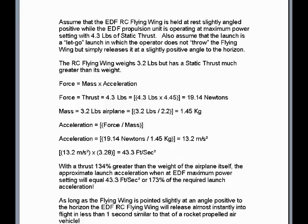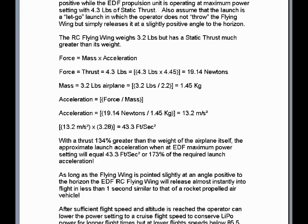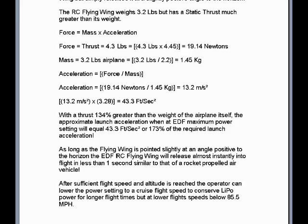As long as the flying wing is pointed slightly at a positive angle to the horizon, the EDF RC flying wing will release almost instantly into flight in less than a second, similar to a rocket-propelled air vehicle. After sufficient flight speed and altitude is reached, the operator can lower the power setting to a cruise flight speed to conserve LiPo power for longer flight times, but at lower flight speeds below 85.5 miles per hour.